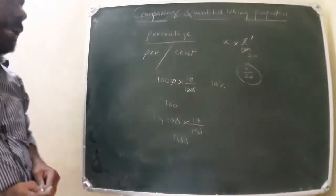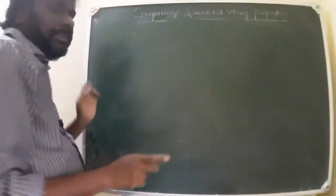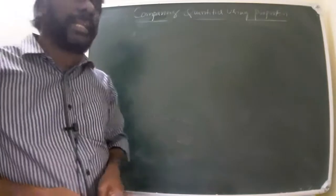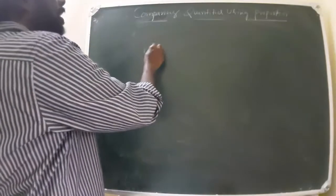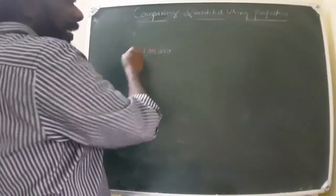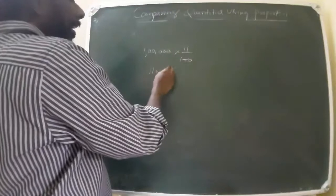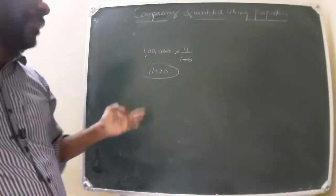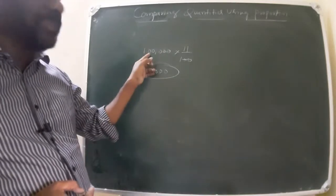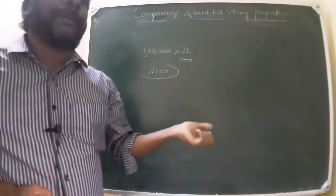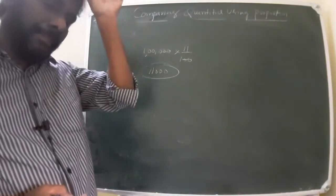For example, if you go to the bank and deposit one lakh rupees, they will give eleven percent interest per year. That means after one year you will get eleven thousand rupees interest, so you receive one lakh plus eleven thousand. Like that, we gain interest using this percentage concept.